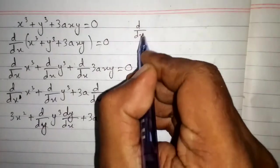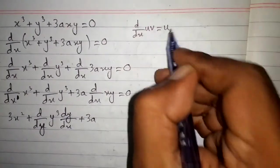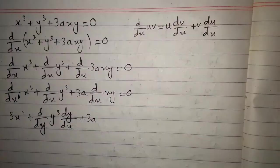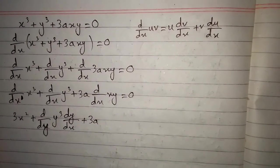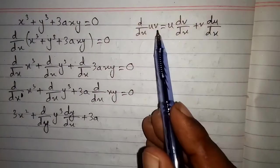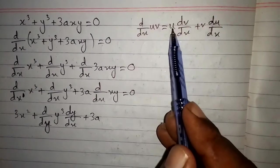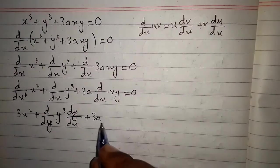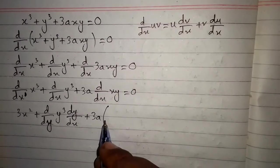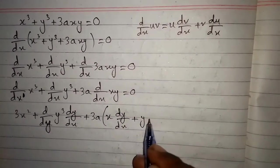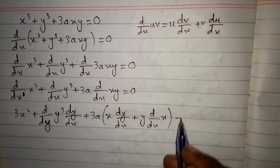Now we have to take the derivative of xy. To differentiate xy we apply the product rule: d/dx of uv equals u times the derivative of v plus v times the derivative of u. Here x is in place of u and y is in place of v, giving us x·dy/dx plus y·d/dx of x.